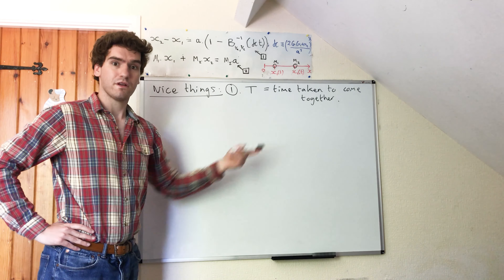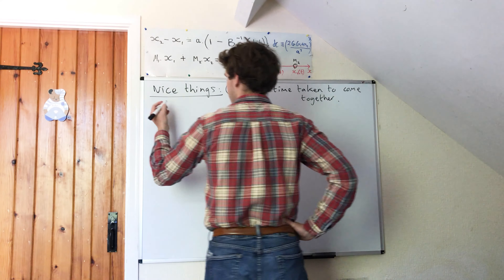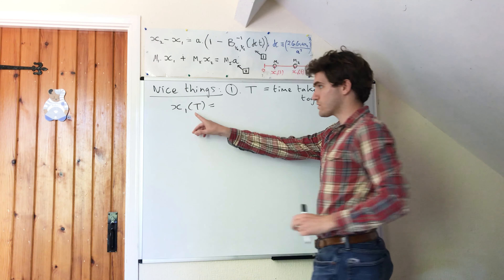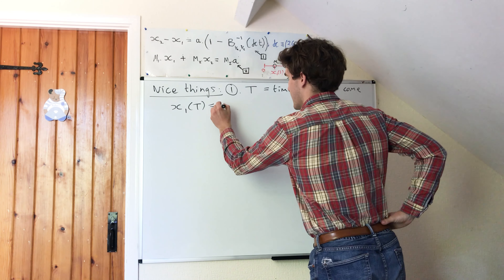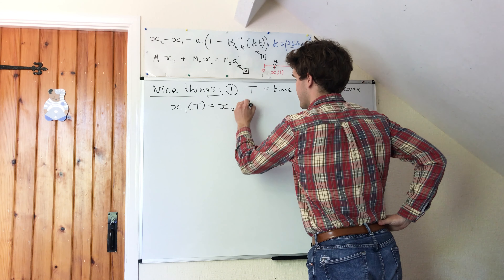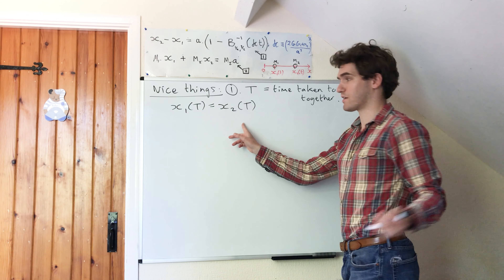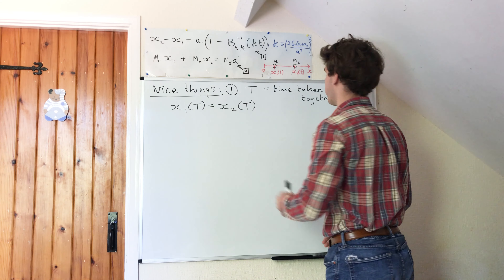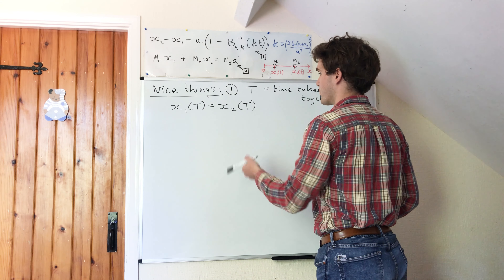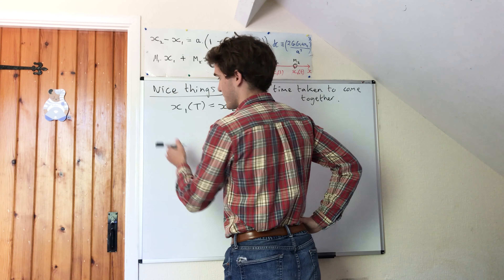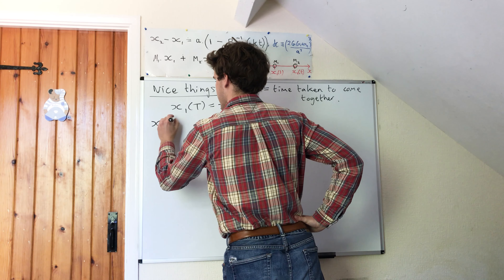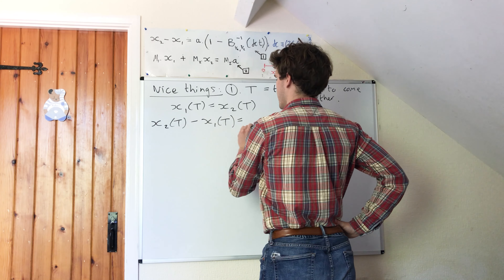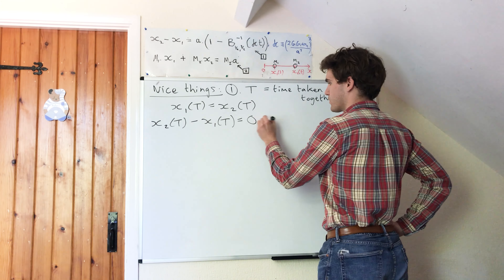By definition, this time will satisfy the formula that when x1 is evaluated at this time, it will also be at the same position as the second mass when evaluated at the same time. So x1 of big T will be equal to x2 of big T. We can subtract x1 from both sides and get x2 of big T minus x1 of big T is equal to zero. I'm going to call this equation three.